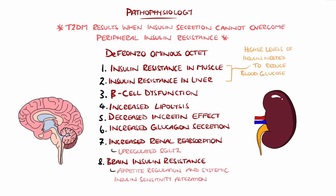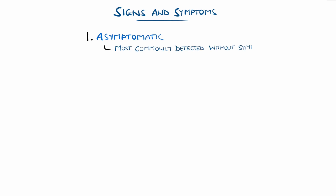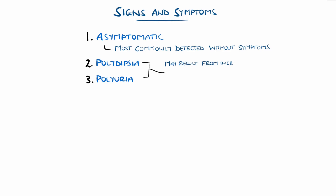Type 2 diabetes often develops silently and tends to be detected on blood tests incidentally. There can be symptoms linked to the chronically high blood glucose — for example polydipsia, meaning increased thirst, and polyuria, meaning increased production of urine. These both occur as a result of increased glucose leaking into the urine, pulling water with it, leading to more urine and ultimately dehydration. Though these are typically more common in type 1 diabetes, alongside weight loss and fatigue.